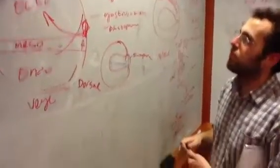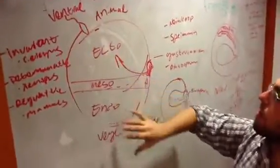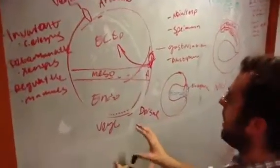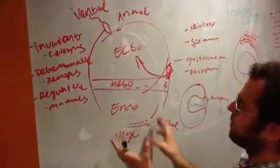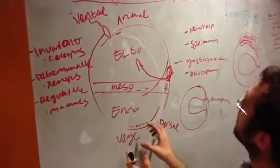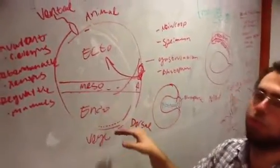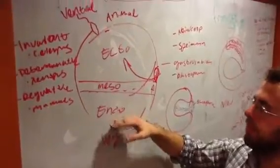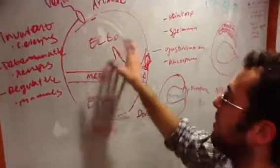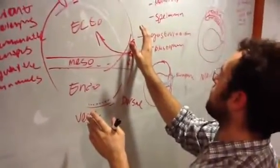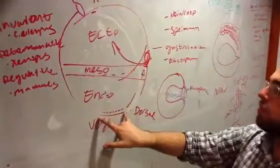For Xenopus development when the sperm meets the egg there's this event called cortical rotation. At the vegetal dorsal region of the egg there are these cortical granules that become the Nieuwkoop center. When the sperm meets the egg the cortex rotates and what that does is it moves these granules over here.